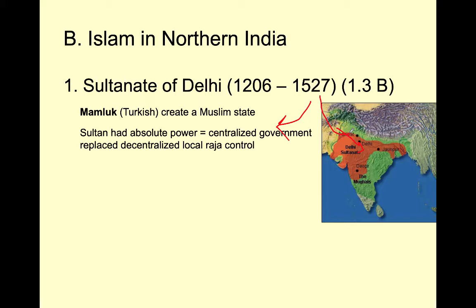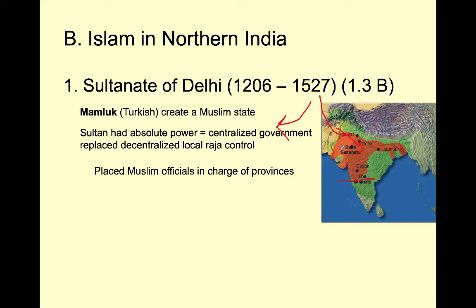They're going to try to centralize control. They conquer northern India — and importantly, Muslims are never able to conquer the southern part of India. You can see that even today: Pakistan has lots of Muslims, Bangladesh has lots of Muslims, but southern India is mostly Hindu still. The Sultanate of Delhi divides their empire into provinces, and they remove Hindus as much as possible from local governance, placing Muslim officials they feel they can trust, since they don't share a religion with Hindu kings and princes.